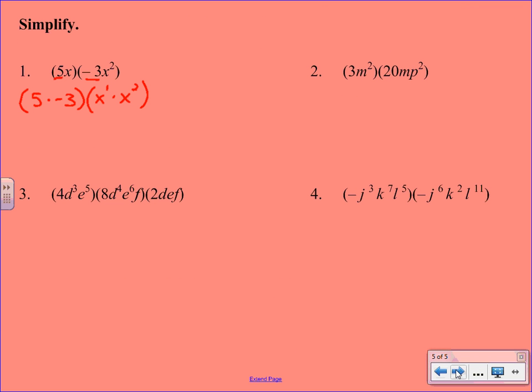Okay, so if we just quickly glance back at the steps, we group the coefficients, we group the variables. Now we just have to work on multiplying and simplifying. So when we simplify here, we've got 5 times negative 3, which gives us negative 15. We're going to apply the property that we just learned about, and when we multiply exponents with the same base, we're going to add. So our final answer ends up being negative 15x to the third. We didn't have to worry about the alphabetical order here, because we only had one variable.